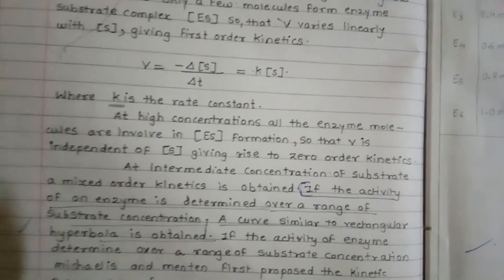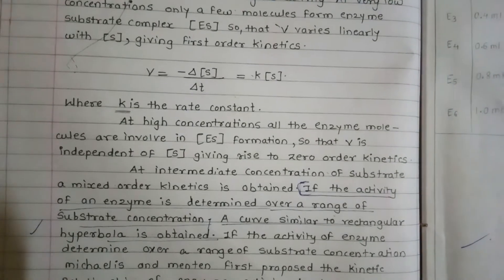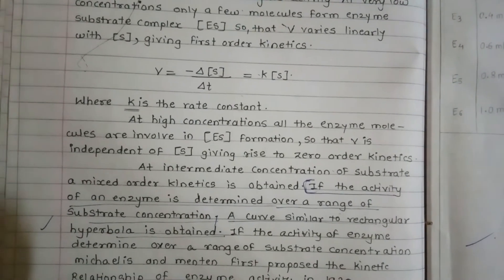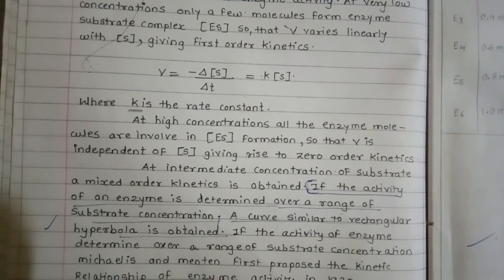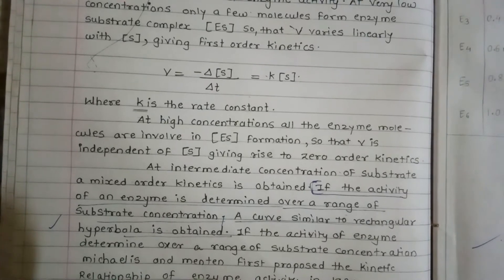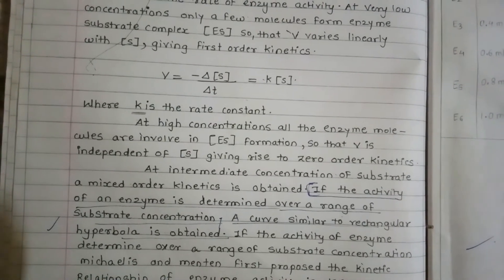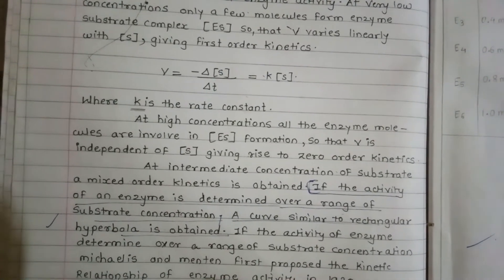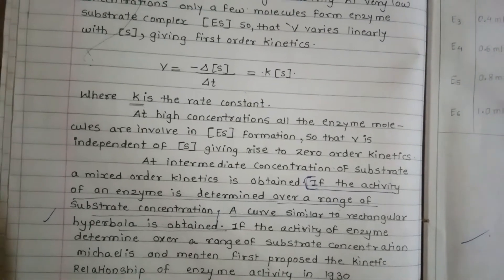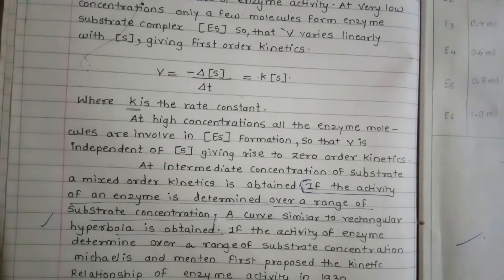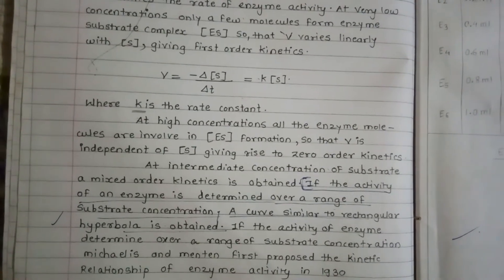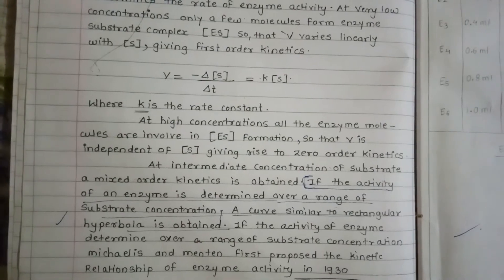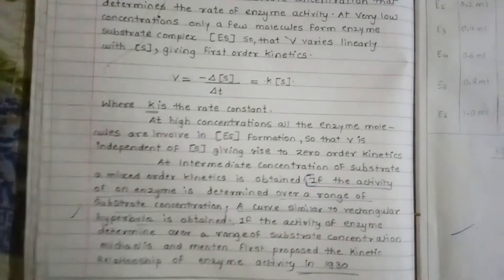Initially we observe first-order kinetics, and at intermediate substrate concentrations a mixed-order kinetics is observed. If enzyme activity is determined over a range of substrate concentrations, a curve similar to a rectangular hyperbola is obtained. We can plot a Michaelis-Menten graph to study the effect of substrate concentration on acid phosphatase activity.